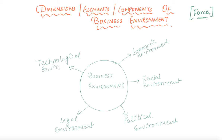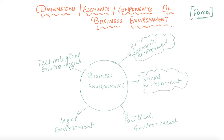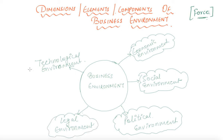We already discussed about them before as well, but furthermore we will learn about these in detail — what these environments basically mean. So your first is economic environment, second is social environment, next is political environment, next is legal environment, and fifth is technological environment. Let us study and learn about these more.